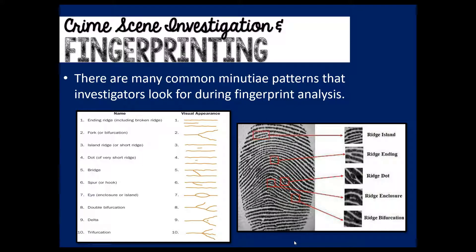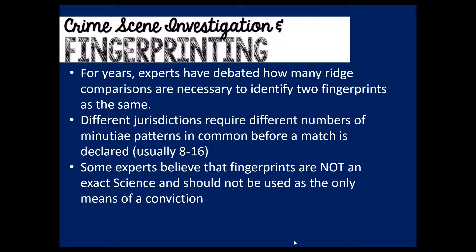We're going to do some practice identifying these different minutia patterns in a fingerprint. I'll always give you a cheat sheet like the one on screen. On the right side of the screen you can see some different minutia patterns and what they look like in a real-life fingerprint. For years, experts have debated how many ridge comparisons are necessary to identify two fingerprints as a match. Different jurisdictions require different numbers of minutia patterns in common — usually eight to sixteen points of comparison — before a match is declared, such as 85% or 90% likelihood.